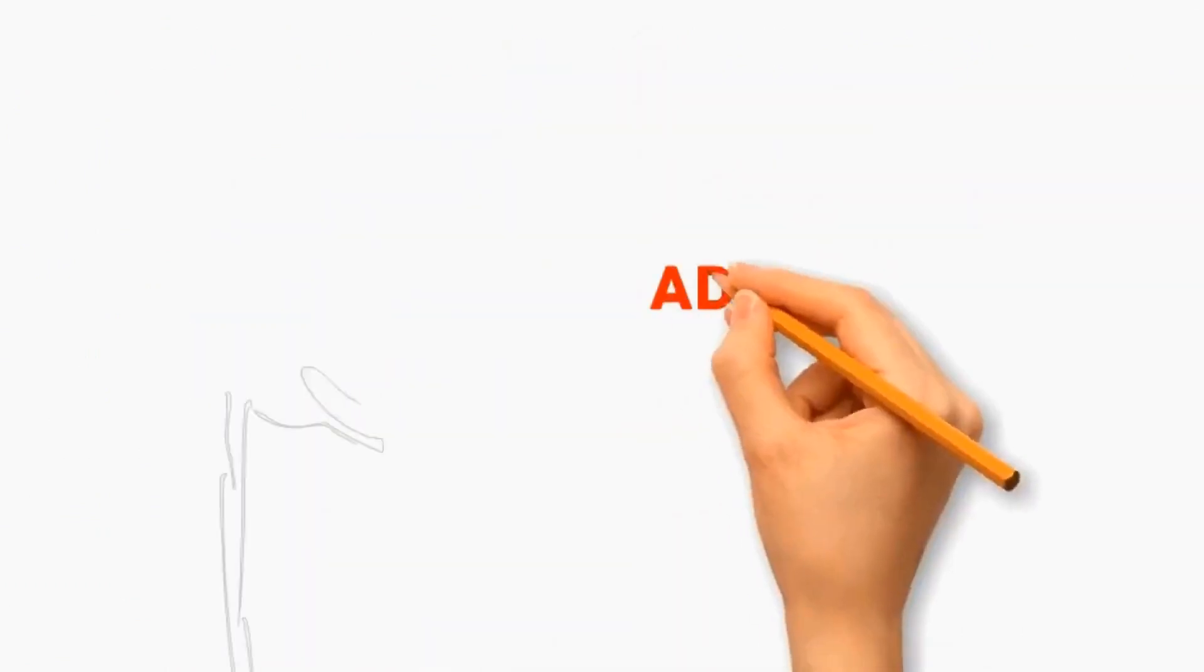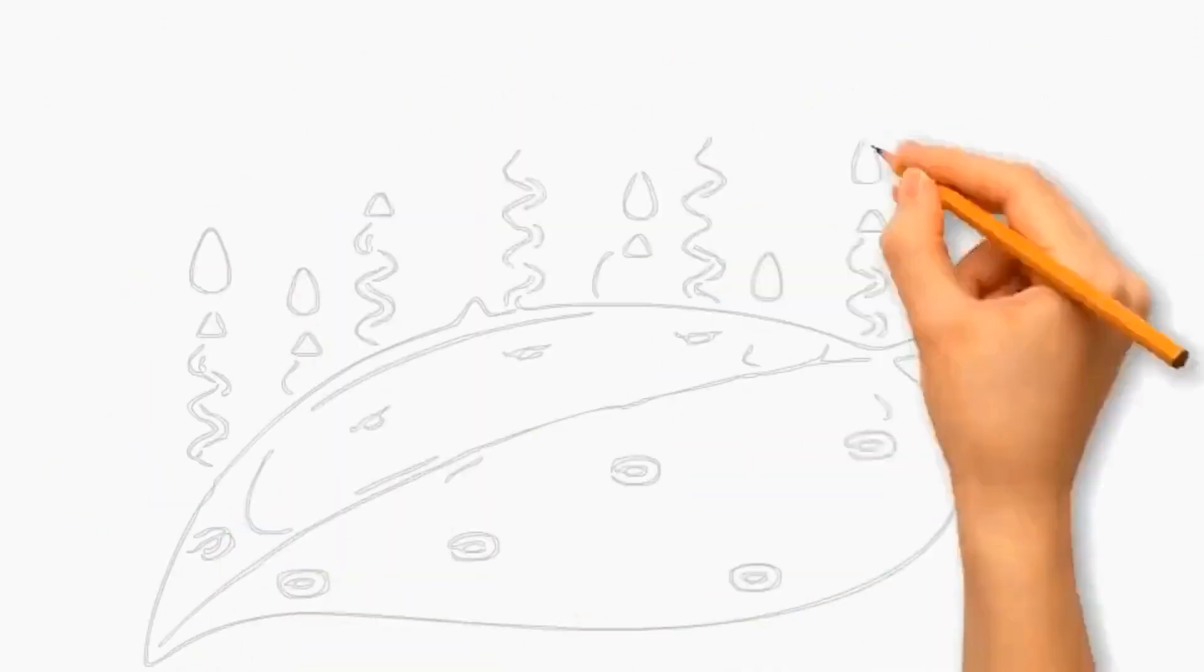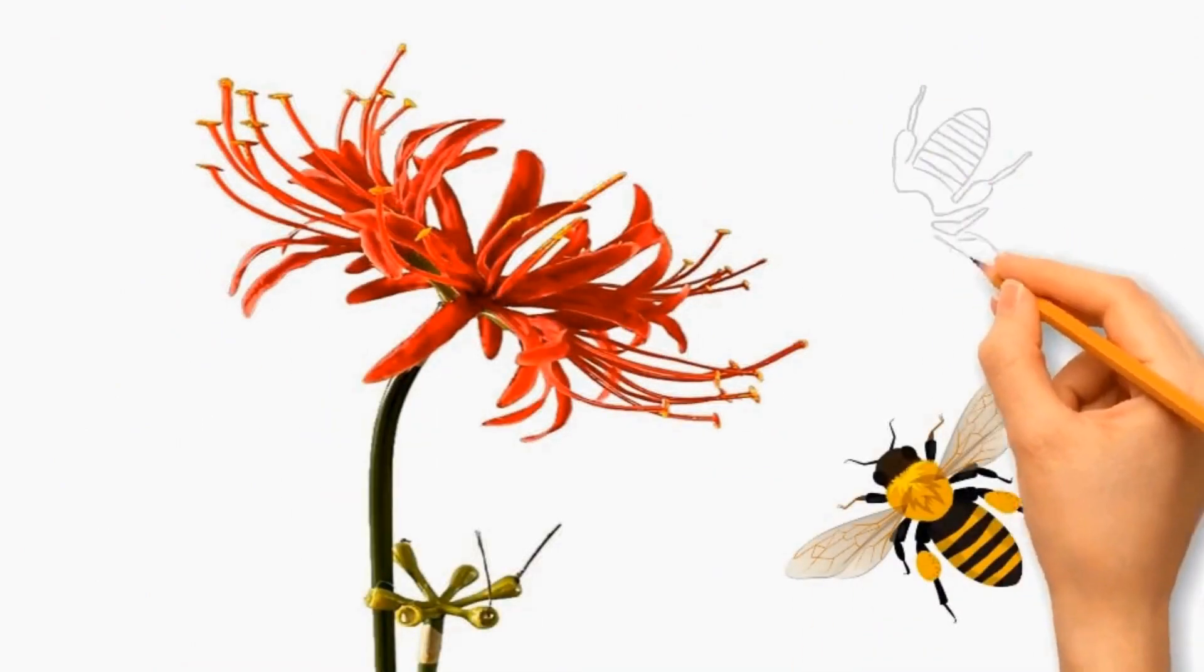Let's see the adaptations of Red Spider Lily. It has long, narrow leaves that reduce surface area, minimizing water loss through transpiration. The vibrant red color of the flowers attracts pollinators such as bees, aiding in effective cross-pollination.